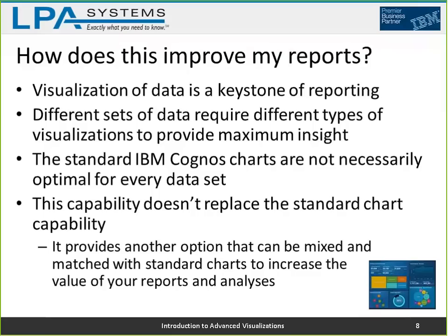Having a whole new library of things to do that — including tree maps, network maps, and heat maps — can help you zero in on anomalies and opportunities. Different sets of data require different types of visualizations to provide the best insight, so the more options you have, the better your reporting can be. Standard Cognos charts — bar charts, column charts, pie charts — are not necessarily optimal for highlighting things in every dataset.